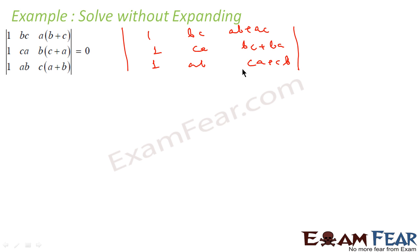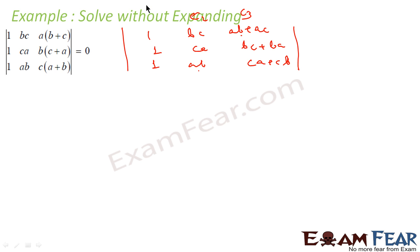If we observe and add columns 2 and 3, each entry becomes ab + bc + ca. The first row entry becomes ab + bc + ca, the second also ab + bc + ca, the third also ab + bc + ca — all become the same. So two columns will be proportional, meaning the determinant is 0.